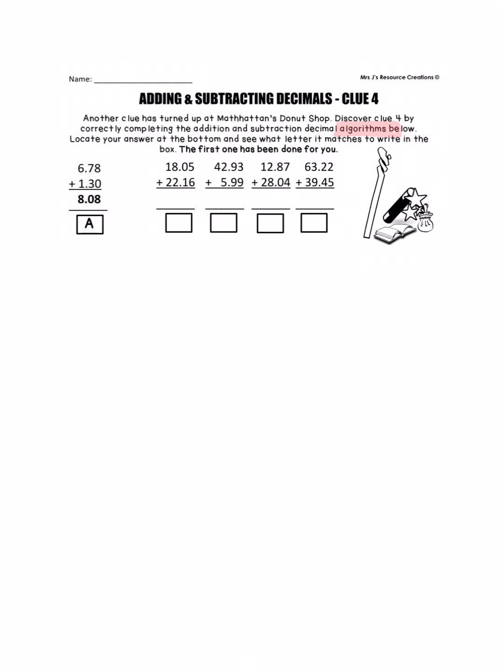So here we're going to add using the algorithm where we stack up our numbers by place value, and we can see that the first one has been done for us. The ones are on top of each other here, the tenths are on top of each other, and the hundredths are all on top of each other.